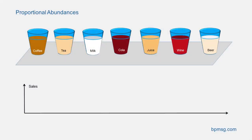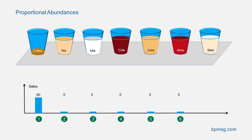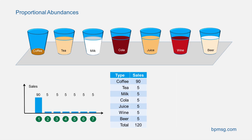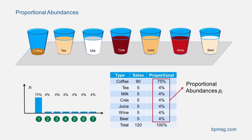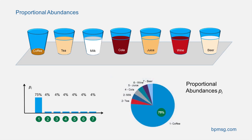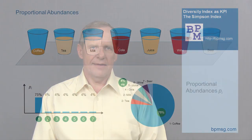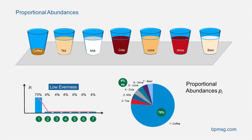But let us have a look at the actual business. You are now offering seven types of drinks — how are they selling? It could happen that you still sell mainly coffee, for example 90 units, and only five units each of all other types of drinks, so 120 units in total. As we are not interested in absolute figures, let us normalize our sales and talk about proportional abundances. 75% of all drinks sold are of the type coffee. So although we have a richness of seven — seven different types of drinks — we have a low evenness in our distribution of drinks sold.